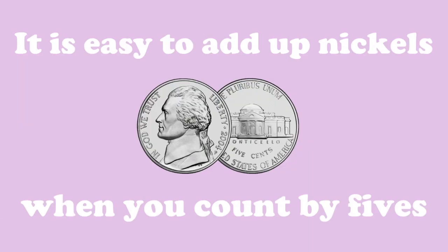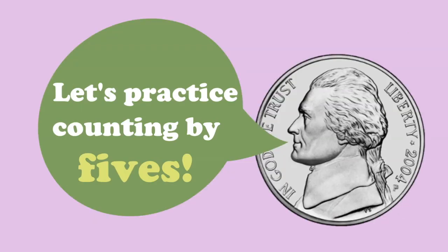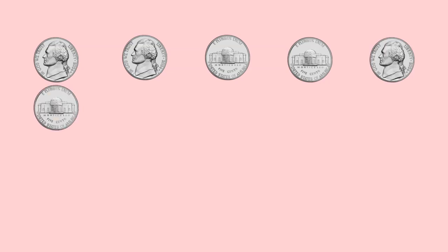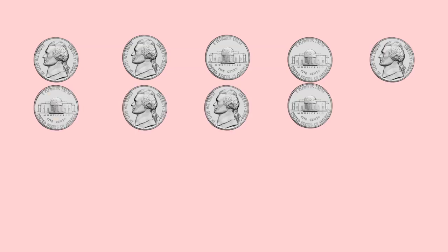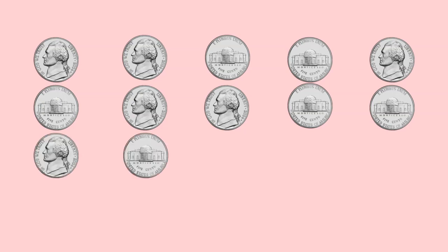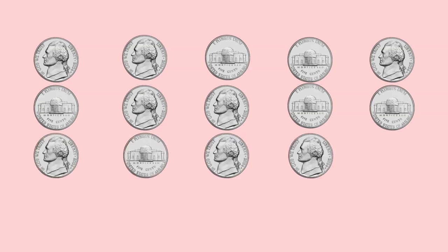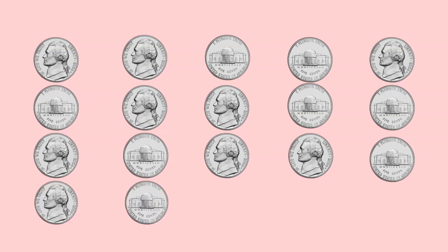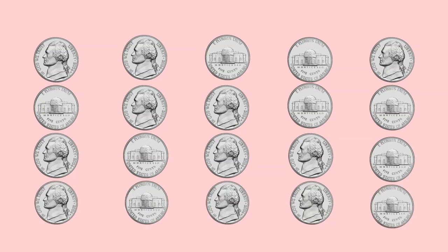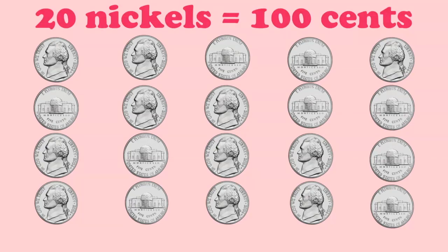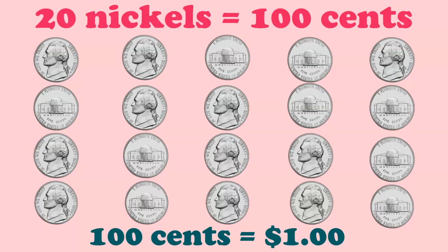It is easy to add up nickels when you count by 5s. Let's practice counting by 5s. 5, 10, 15, 20, 25, 30, 35, 40, 45, 50, 55, 60, 65, 70, 75, 80, 85, 90, 95, 100. Twenty nickels equals one hundred cents. One hundred cents equals one dollar.